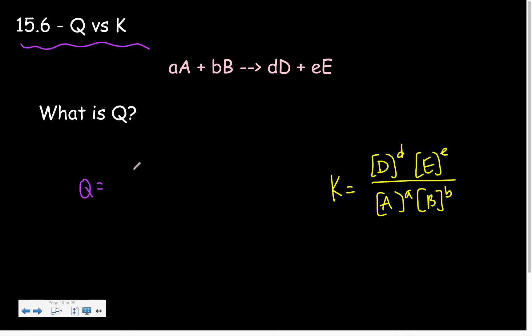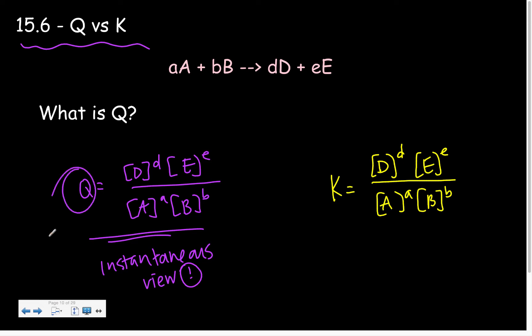Now, Q is like an instantaneous picture of where my reaction is. And it is also products raised to their respective coefficients over my reactants raised to their coefficients. This though is an instantaneous view.